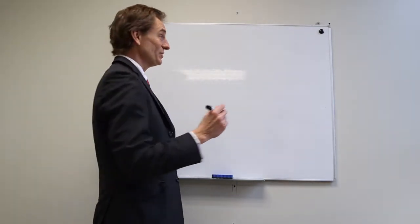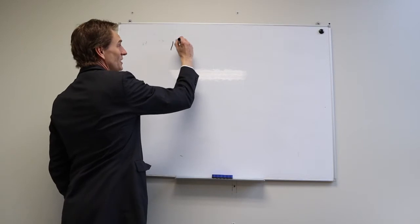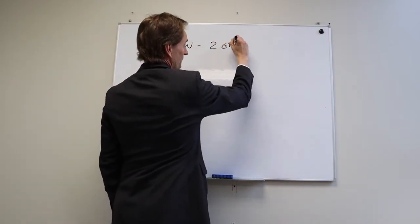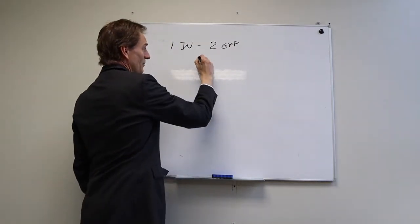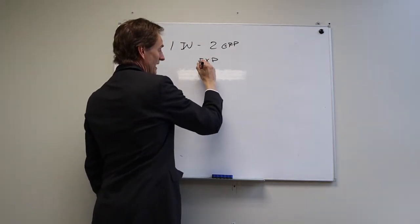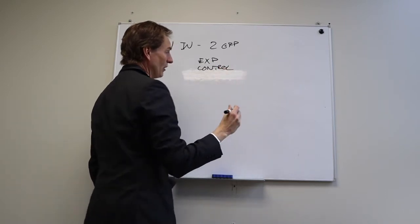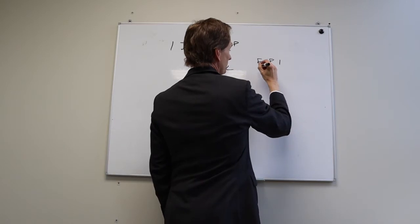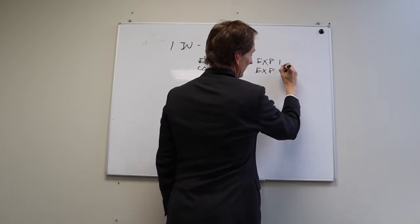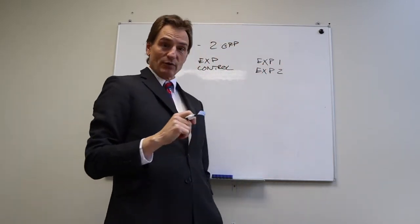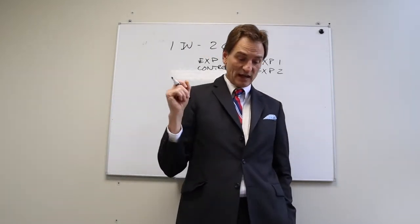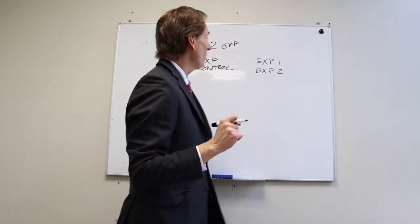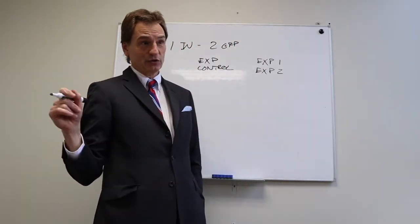The one independent variable two-group design is the simplest type of design you can use. You have one independent variable and two groups — you might have an experimental group and a control group, or two experimental groups getting different levels of the independent variable, like when testing some kind of medication.